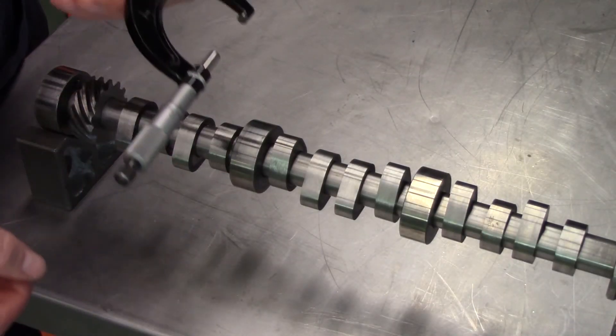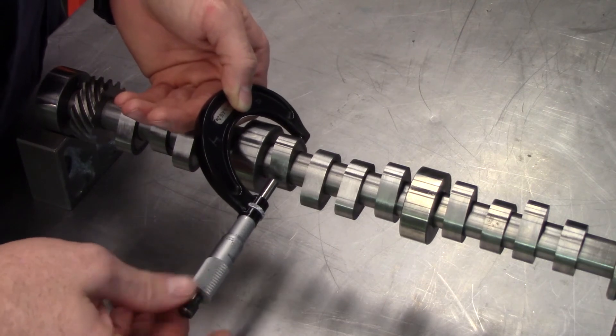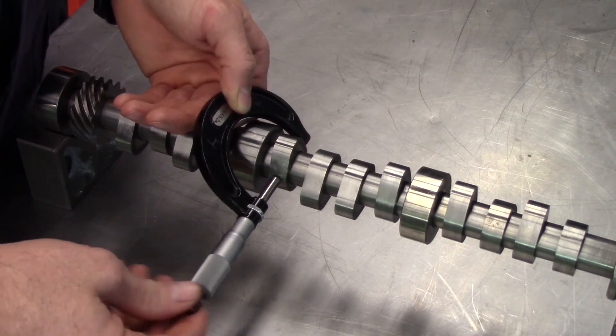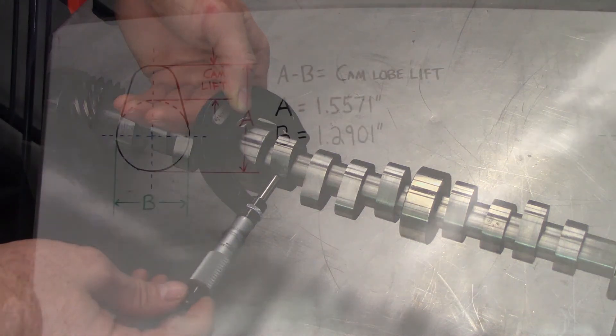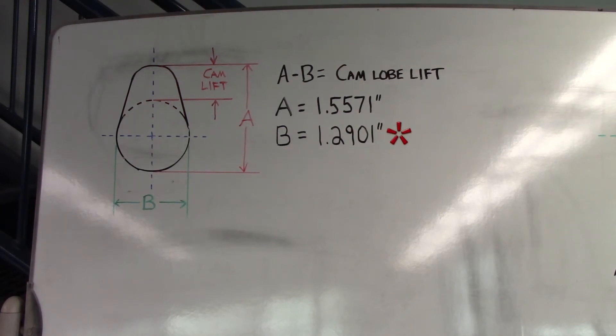Now take another measurement across the base circle portion of the lobe. Our reading is 1.2901 inches. Again, record your result.